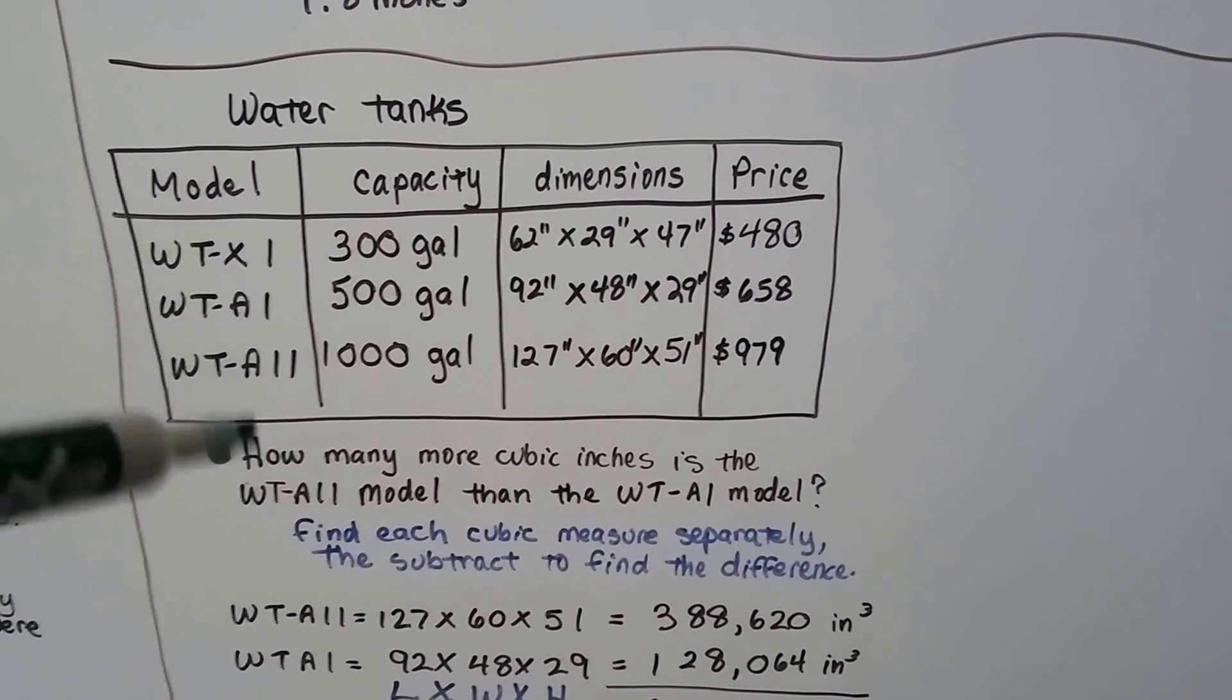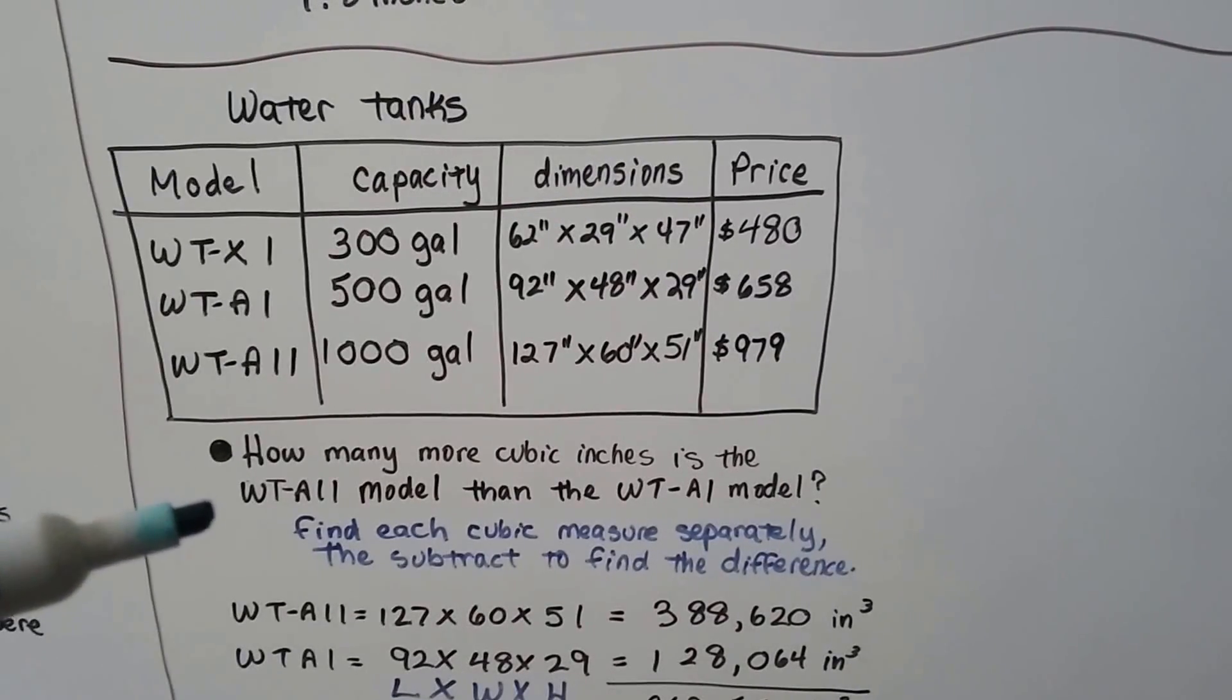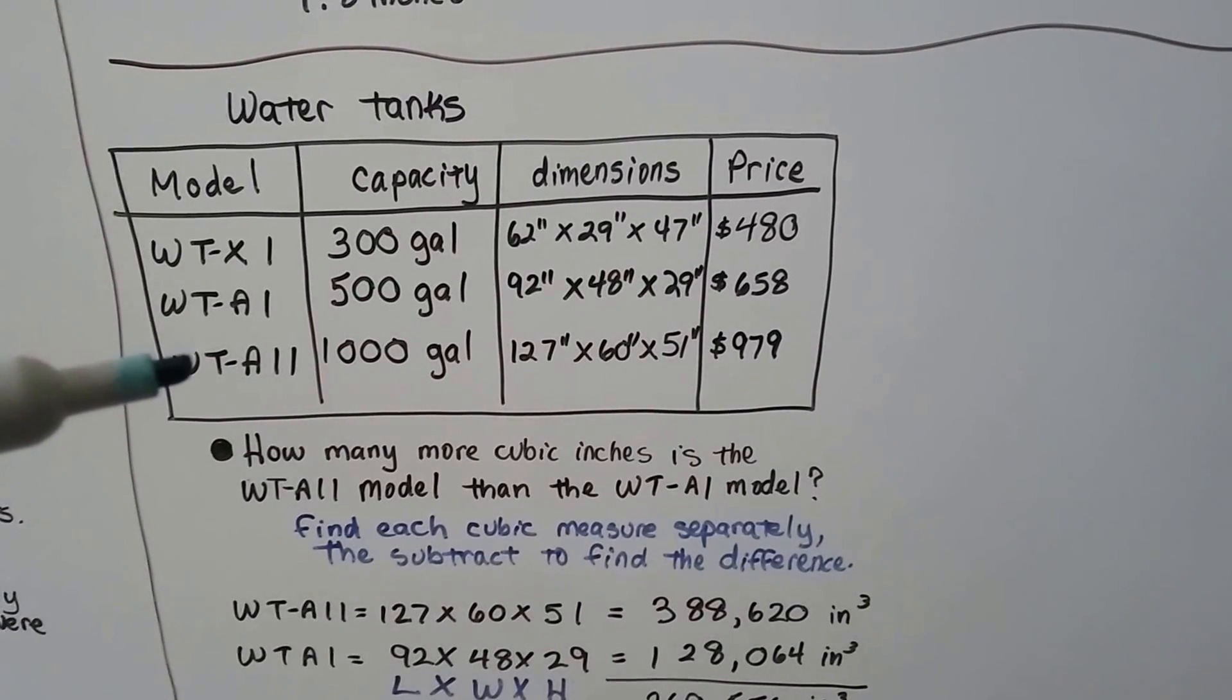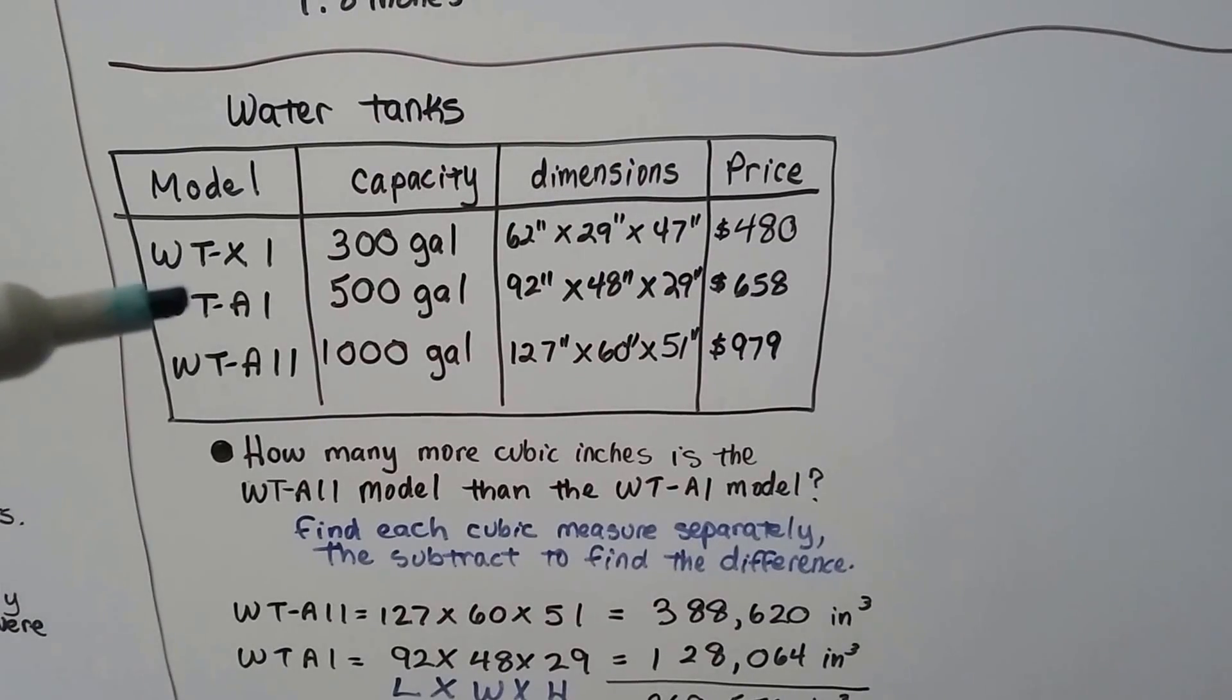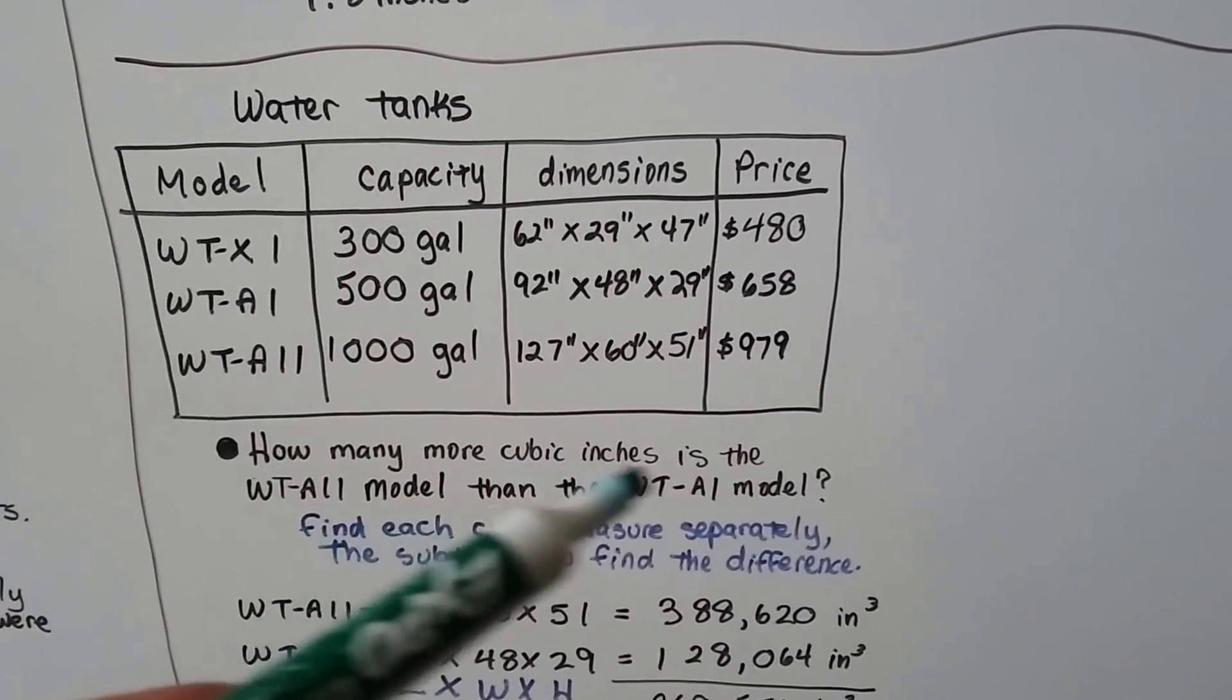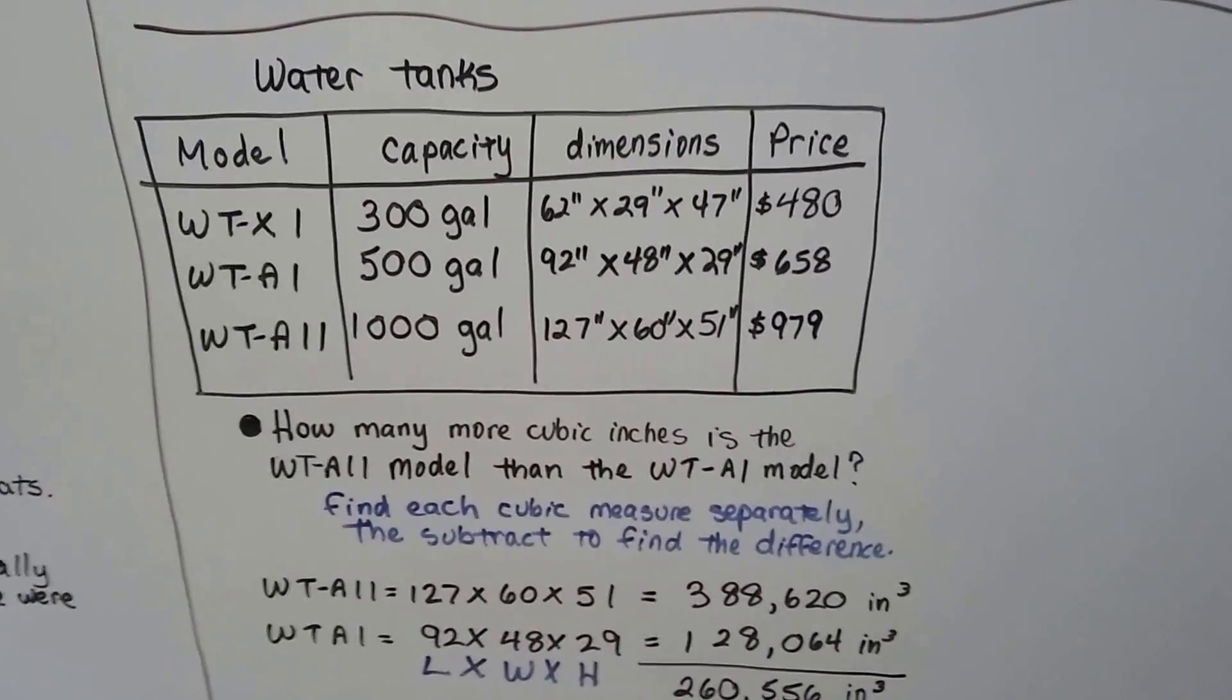How many more cubic inches is the WTA-11 model than the WTA-1 model? Very close in names, so be very careful which one you pick. It wants to know how many more cubic inches this one, this third one is, than the one above it. So this one's 1,000 gallons and that's 500 gallons, but what's their cubic inch difference?